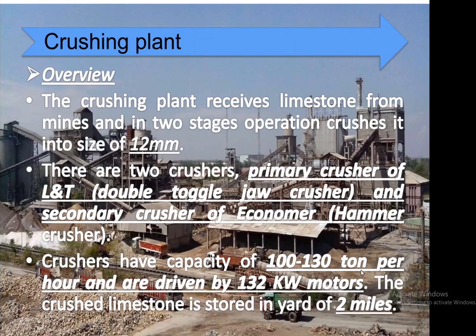In the cement industry crushing plant, limestone is received from mines and crushed in two stages to a size of 12 millimeters. There are two crushers: a primary crusher — an L&T double toggle joint jaw crusher — and a secondary crusher — an Economer hammer crusher. The crushers have a capacity of 100 to 130 tons per hour and are driven by 132 kilowatt motors.